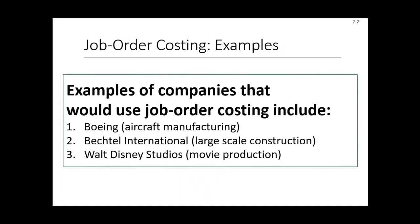An example of a company that would use job order costing — think about Boeing, the aircraft manufacturing company. They're making different types of airplanes, and we would figure out what the cost is assigned to the making of each individual airplane.